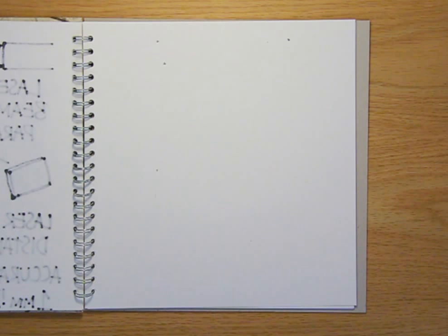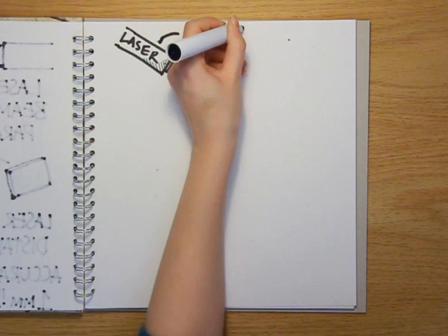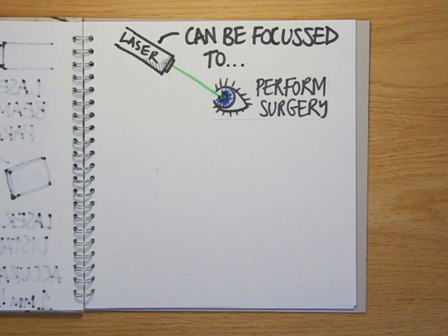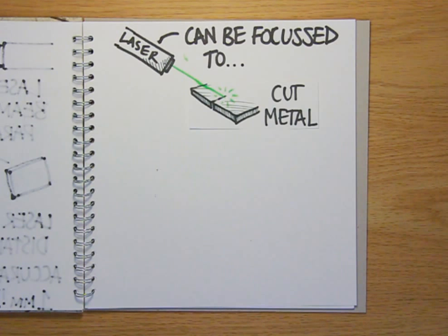Another feature of the beam being so parallel is that the light and therefore the energy of the laser can be focused onto a tiny point, meaning that they can be used to make delicate incisions during surgical procedures like laser eye surgery and in industry to cut through metal or to precision engineer specialist components.